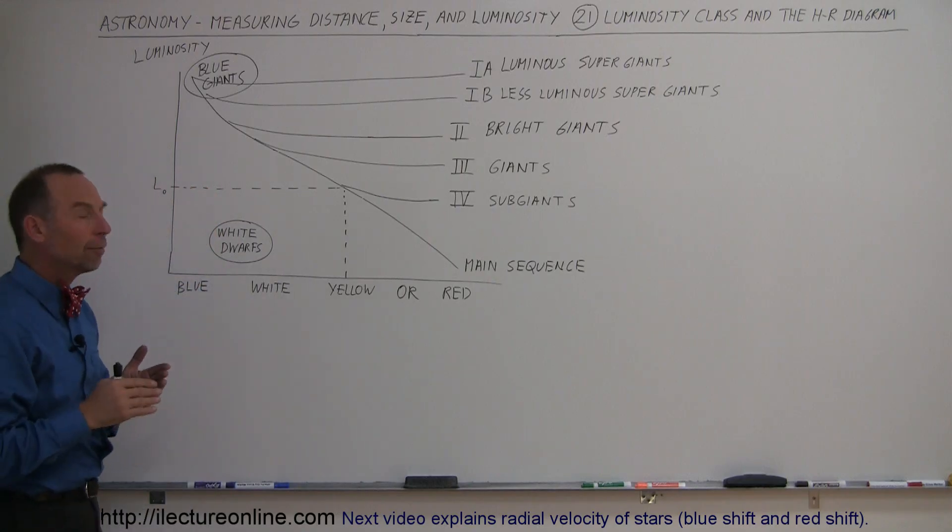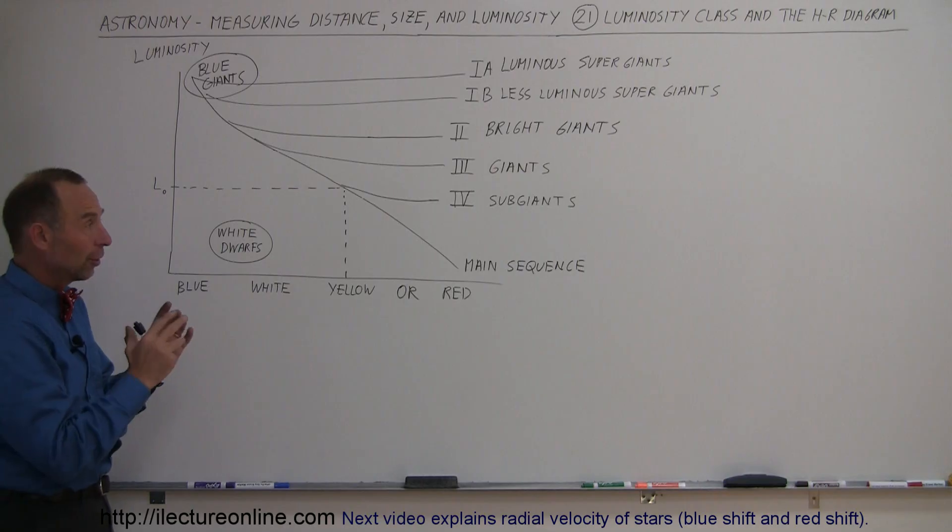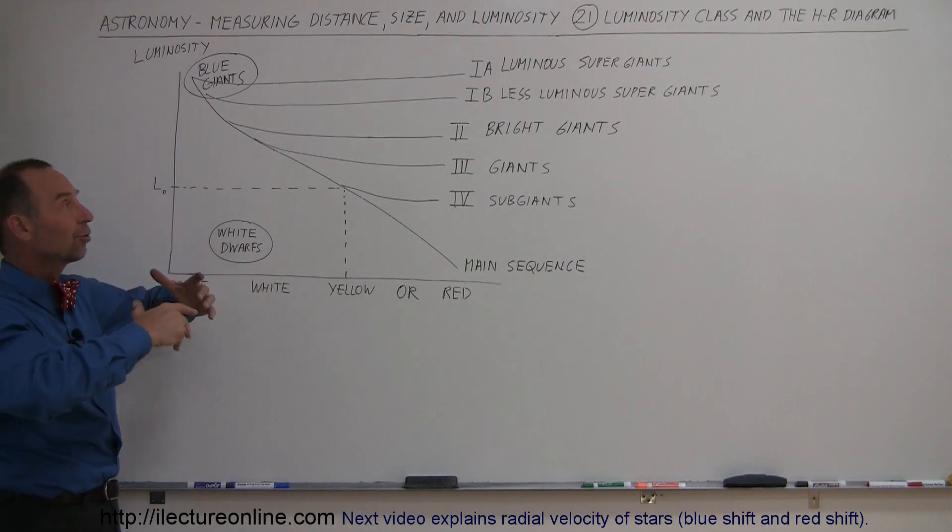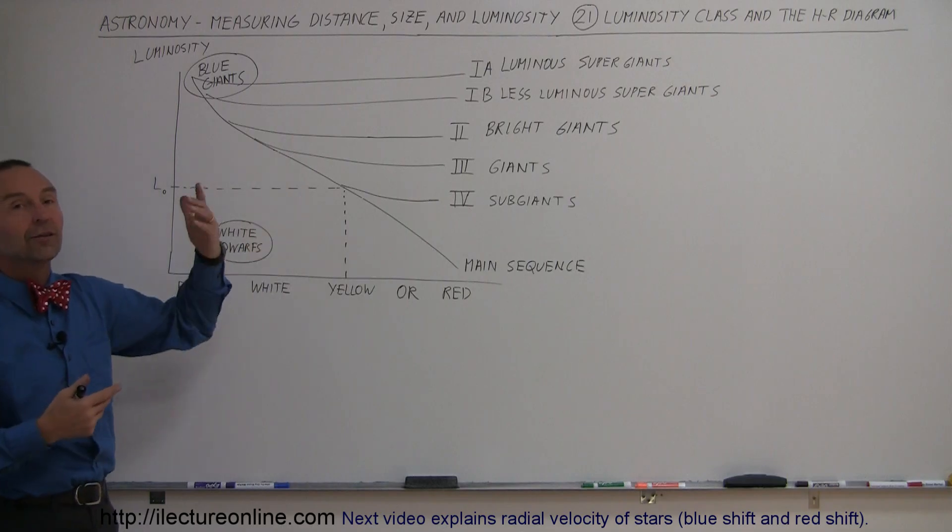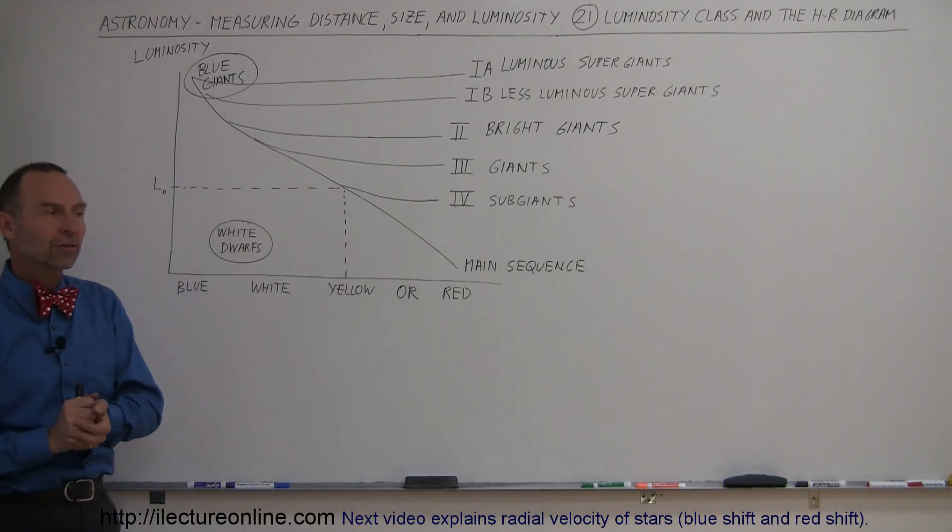But not all red stars are main sequence stars. There are a number of stars that are giants. Some of them are small giants, they call them sub-giants, some are regular giants, some are bright giants, some are super giants. And of those, there's the very luminous super giants and the less luminous super giants.